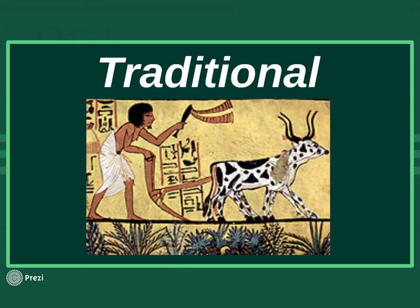There are some basic economic systems — some basic ways that societies have decided to answer these questions. The first one is the concept of traditional. Now this is an odd image to have on an economics lecture — it's from ancient Egypt, and this guy is obviously plowing a field with hieroglyphics in the background. Traditional economic systems are old, antiquated, basic, or fundamental systems. You can see them throughout history.